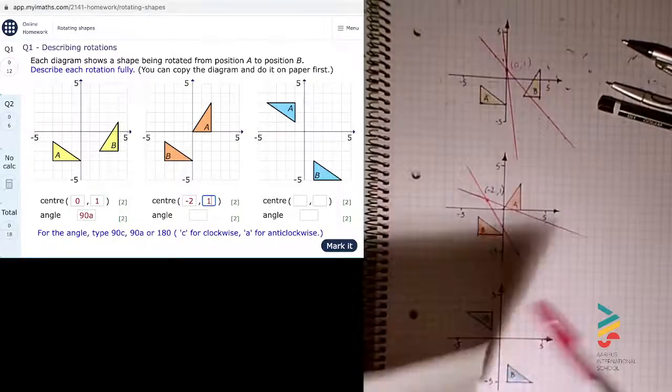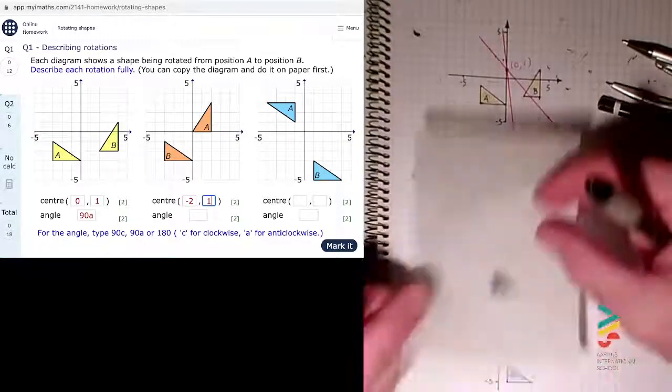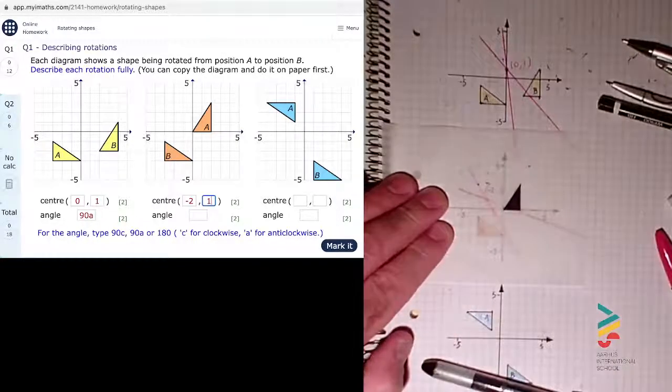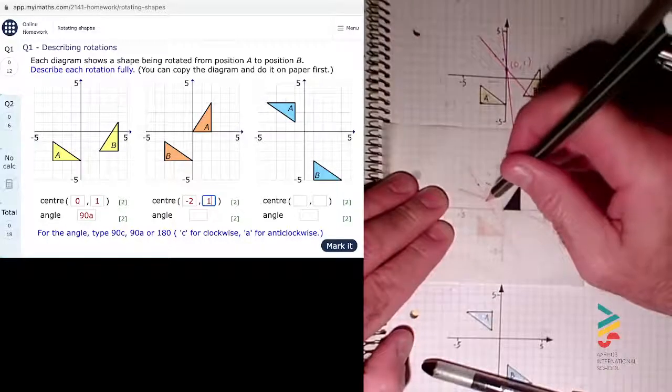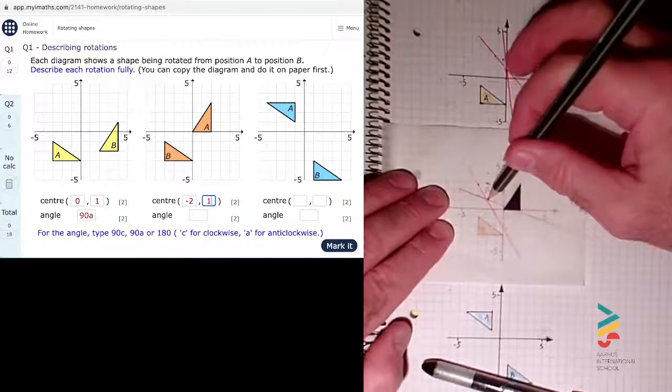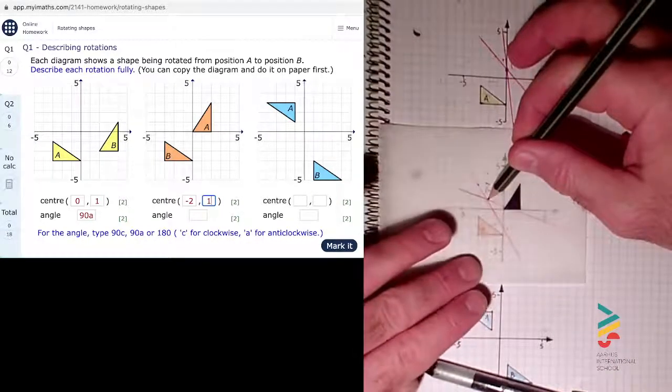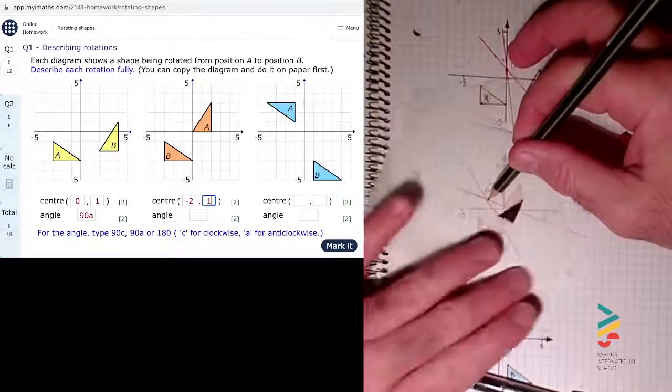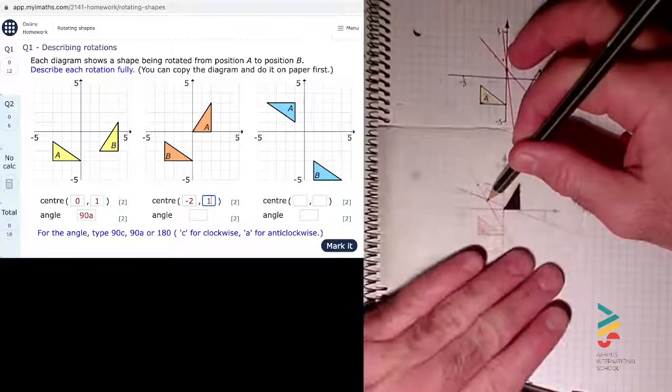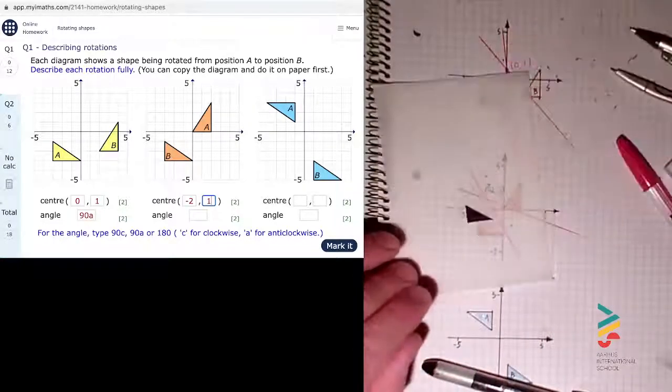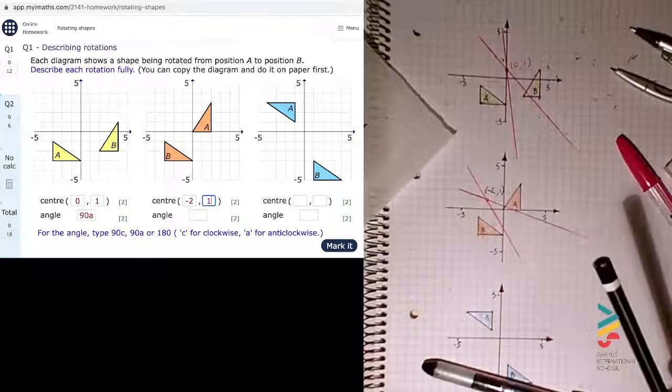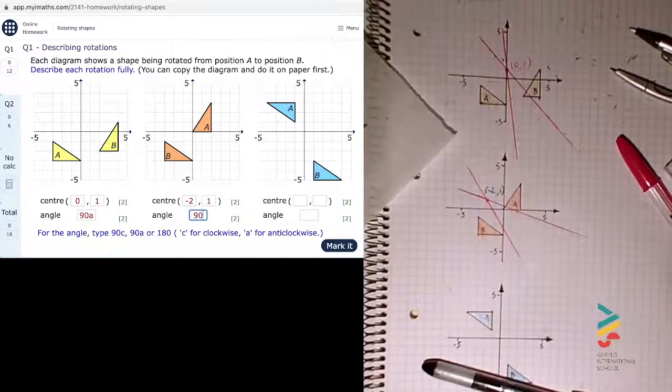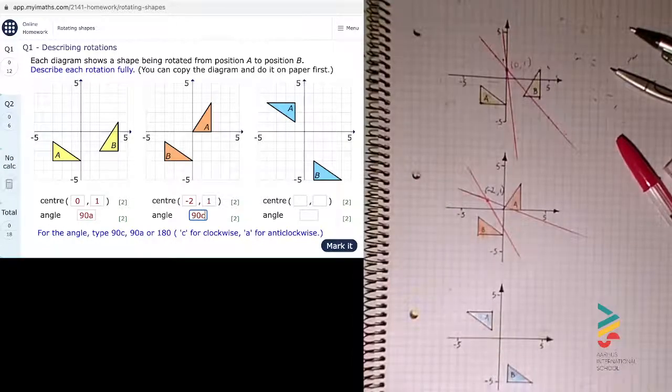I'll just fill that in on the My iMaths, minus two and one for the center of rotation. Then I get my tracing paper again. This time it's from A to B. My original shape's over there, I just stick my pencil in at where I think the center of rotation is. To get to B, it's gone 90 clockwise from A there to B there. I'm going to type in 90C for 90 clockwise.